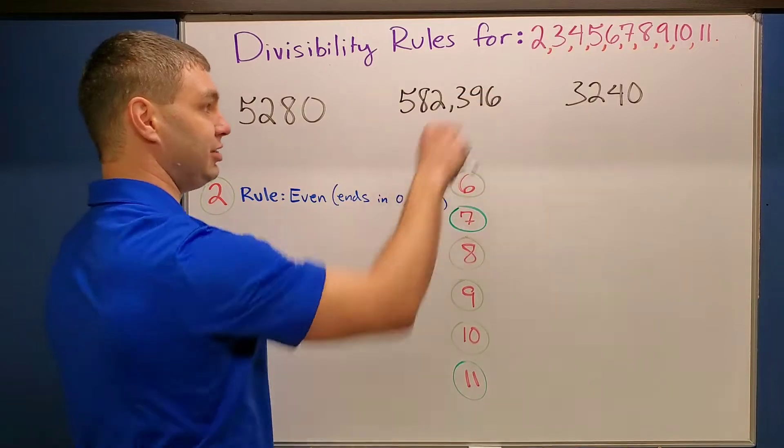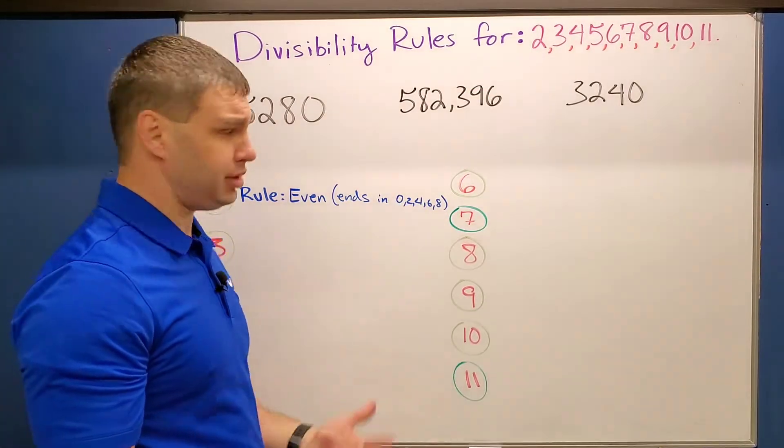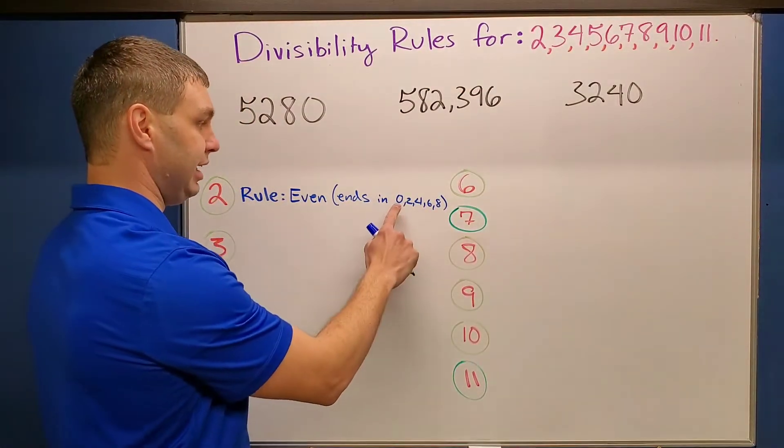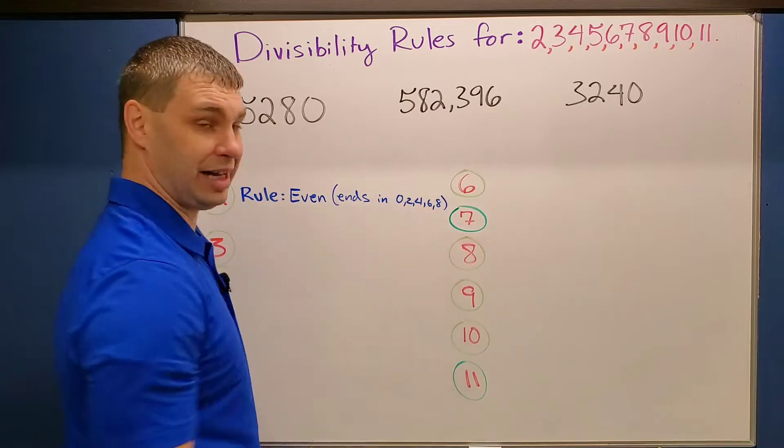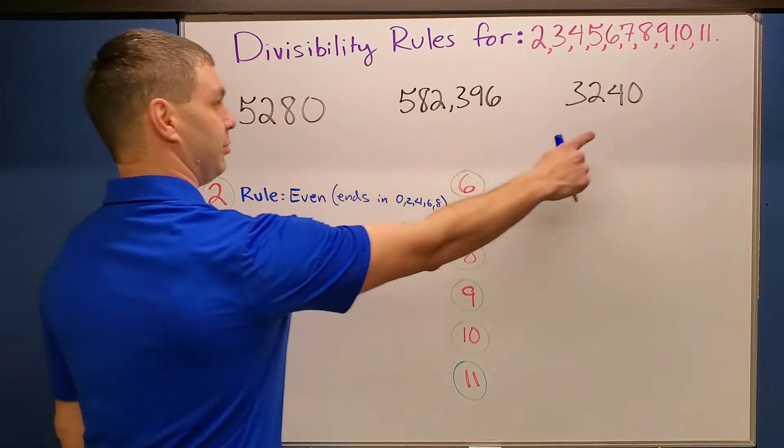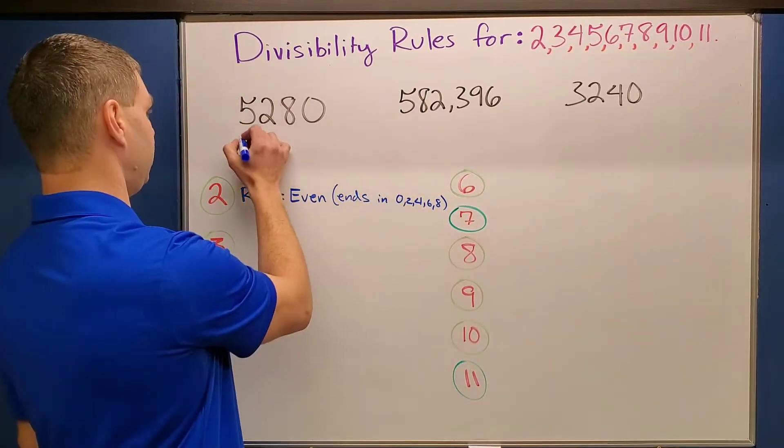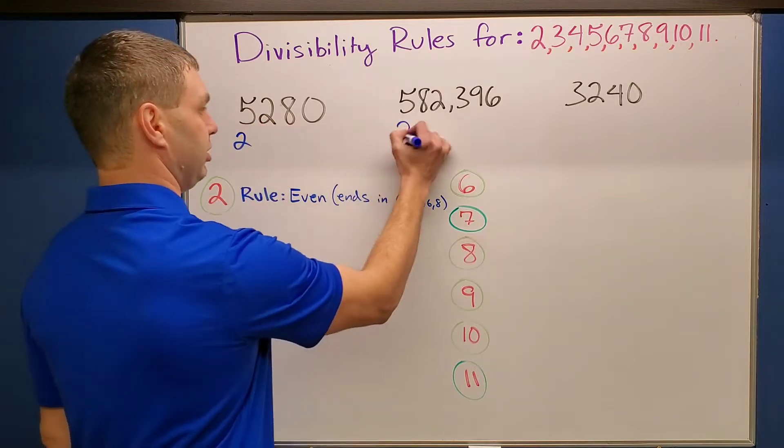Let's jump into our first one, which is the digit two. I think we probably know this one. It has to be even, meaning that it ends in zero, two, four, six, or eight, which our test numbers all do. So these are all three divisible by two.